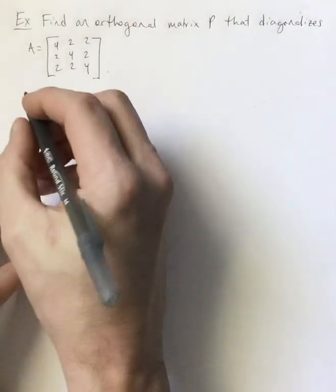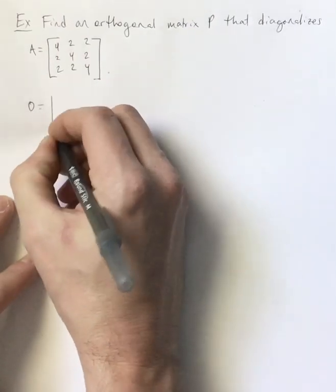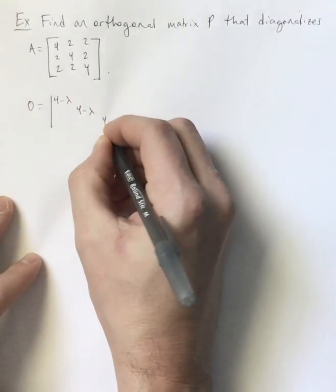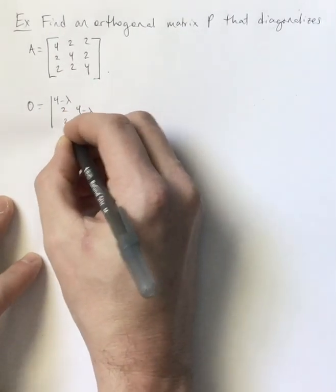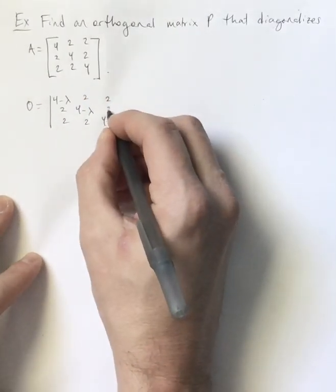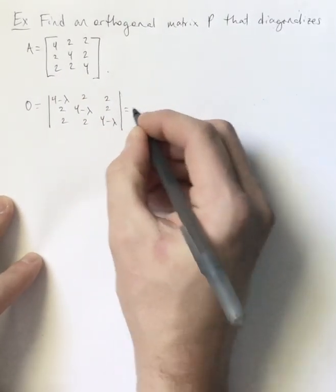And so the very first thing that we will want to do is we will want to find the eigenvalues. And so remember that we set up this determinant A minus lambda I. The determinant of that equals zero.